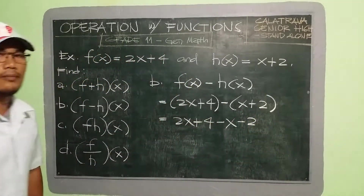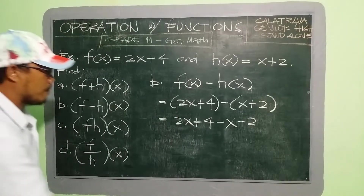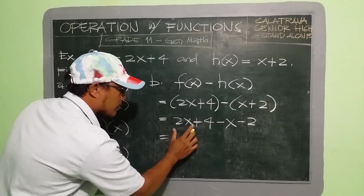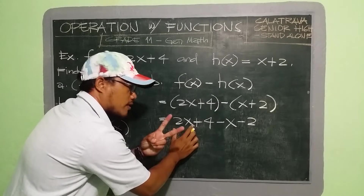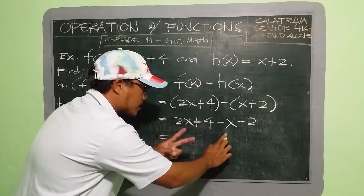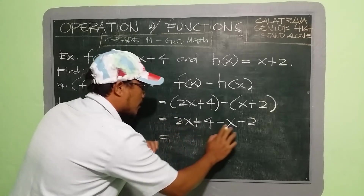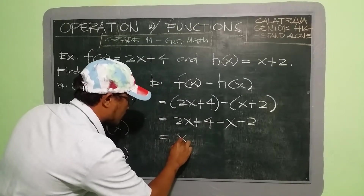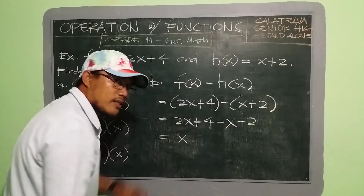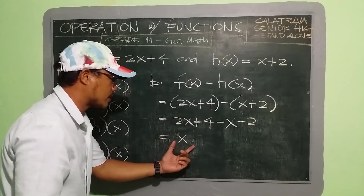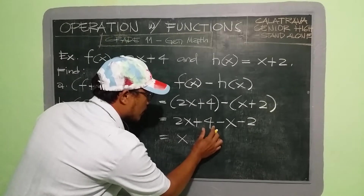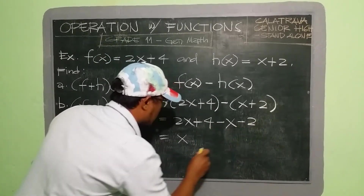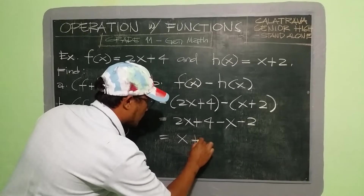Then we simplify by combining like terms. We have 2x minus x, which is 2x minus 1x = x. Then we have 4 minus 2 = 2. So our final answer is x + 2.